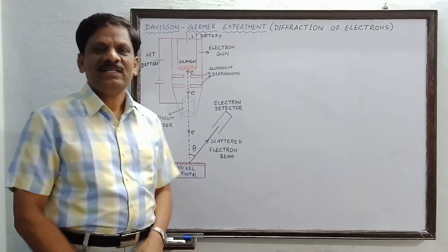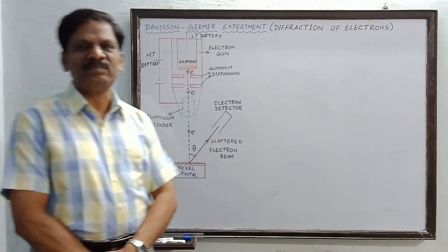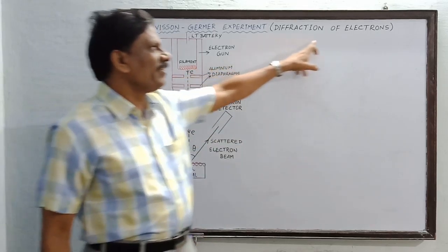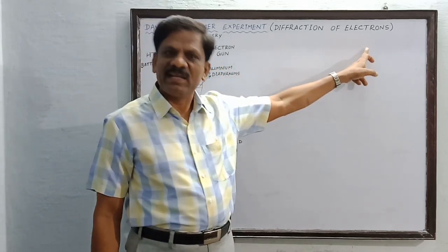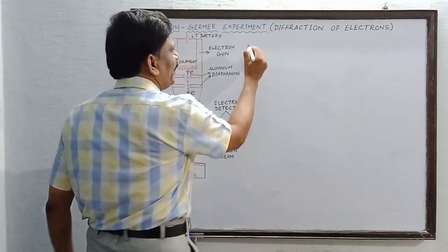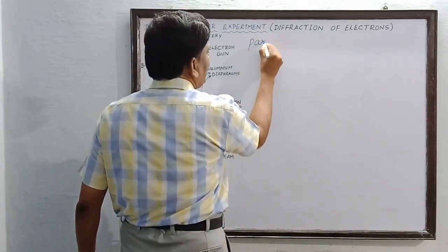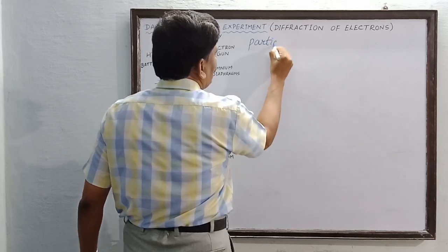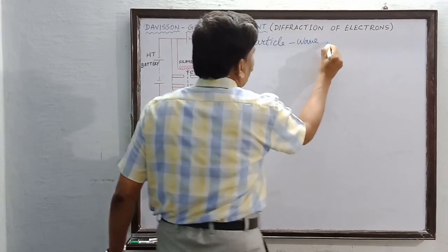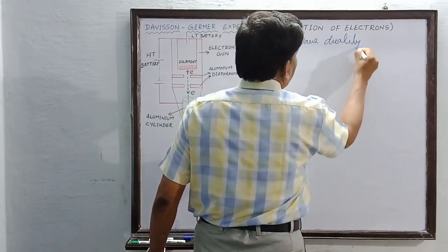Hi students, today we are going to discuss the Davisson and Germer experiment which has explained the diffraction of electrons. It also explains the particle and wave nature of electrons — the wave-particle duality of an electron.